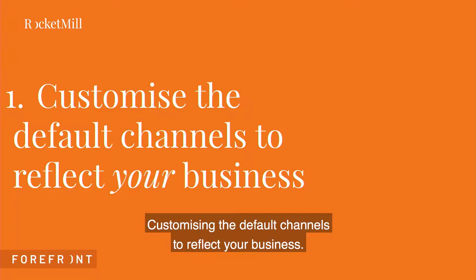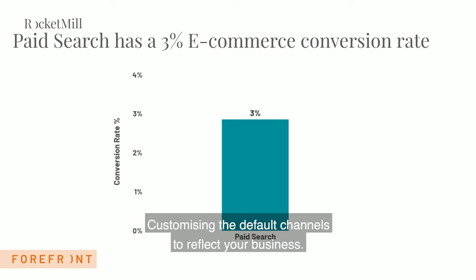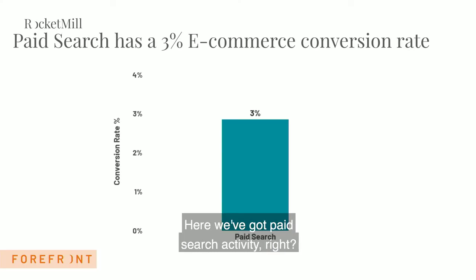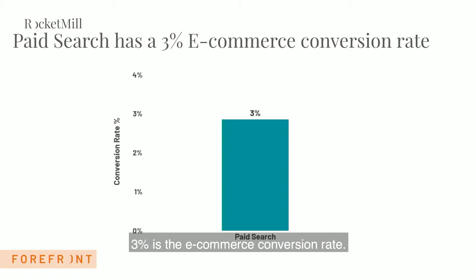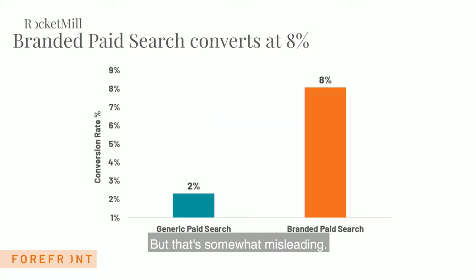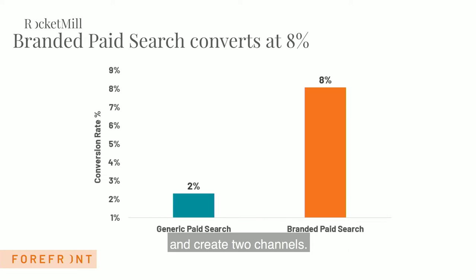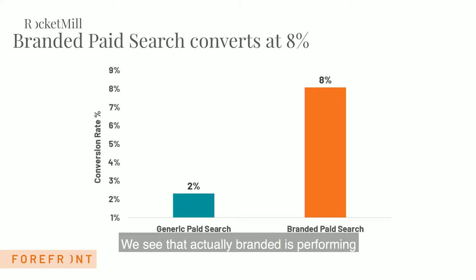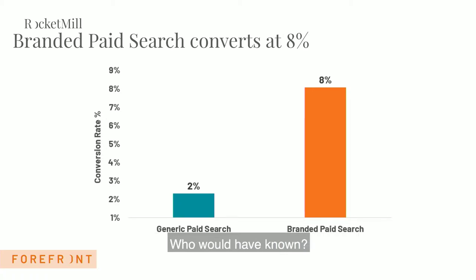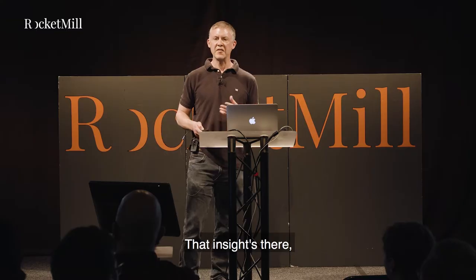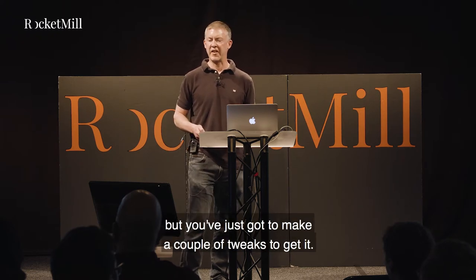Number one: customizing the default channels to reflect your business. Here we've got paid search activity — a 3% e-commerce conversion rate — but that's somewhat misleading. If we split this out and do the hard work of creating two channels, one for generic and one for branded, we see that branded is actually performing four times better than generic. You'd never have known without that insight, but it just takes a couple of tweaks to get there.